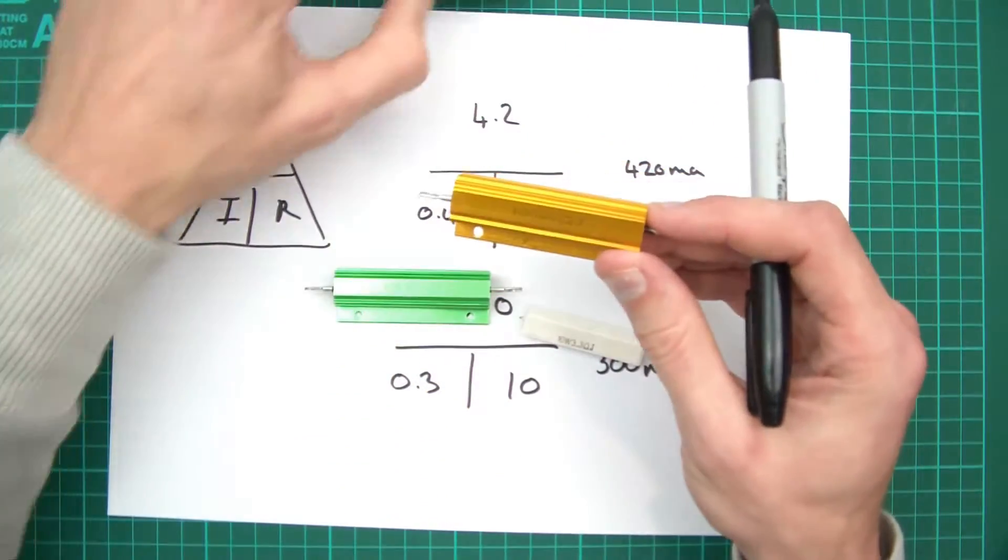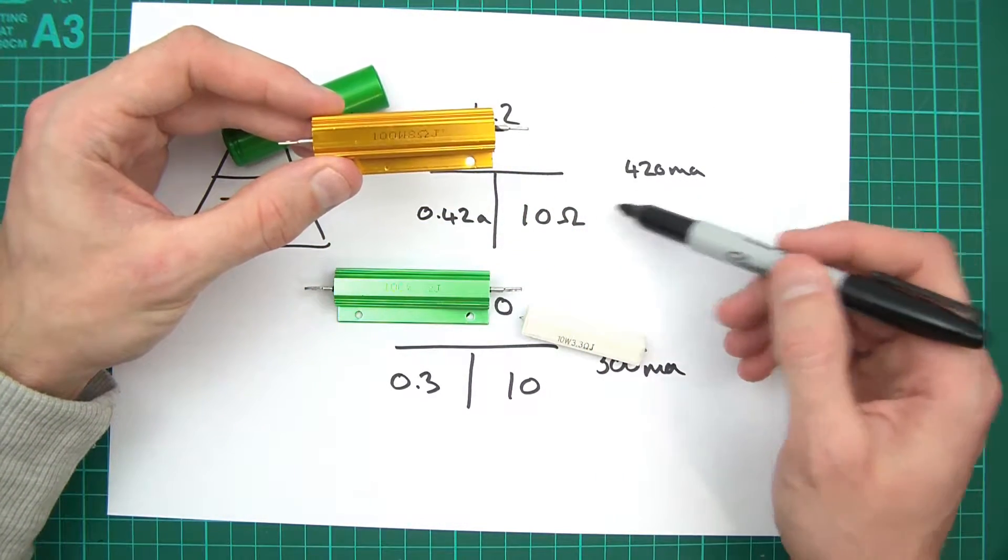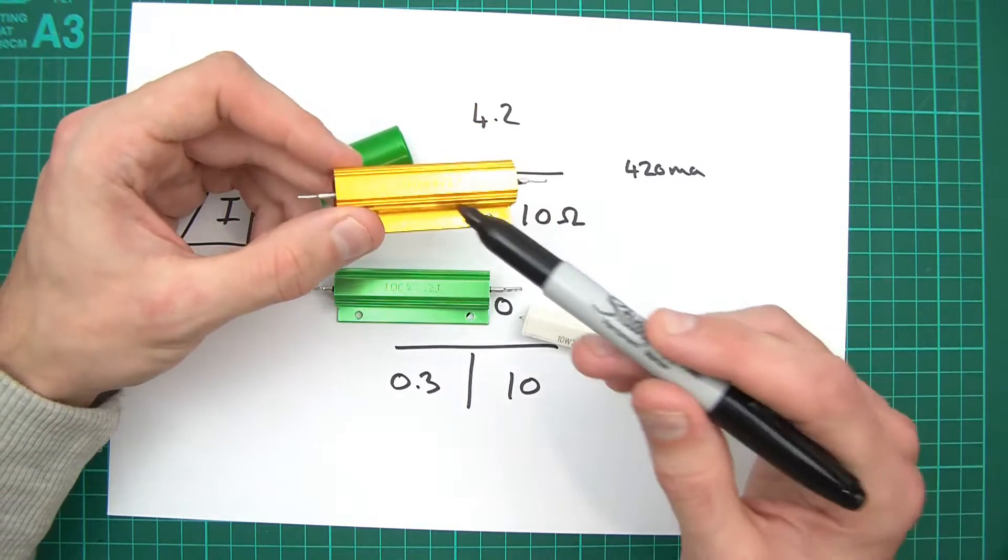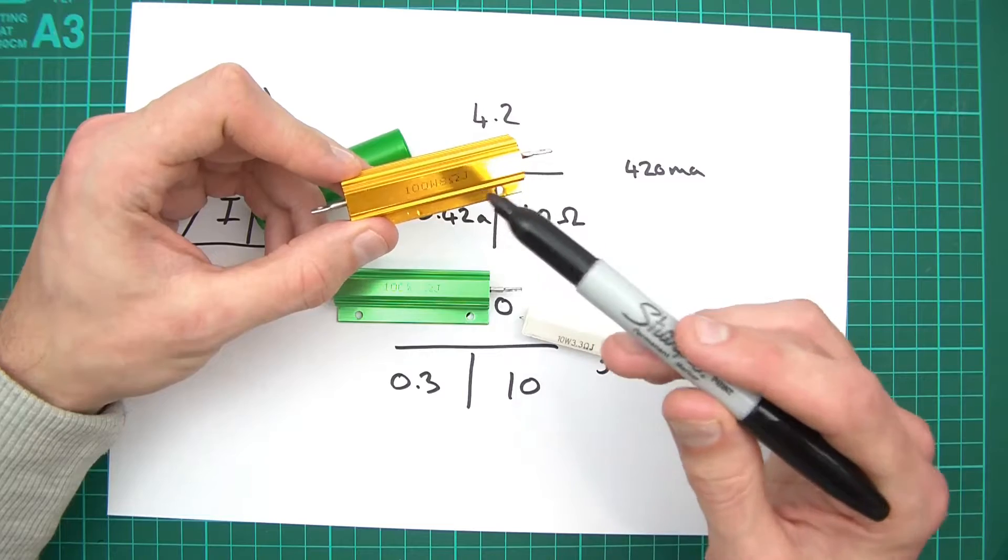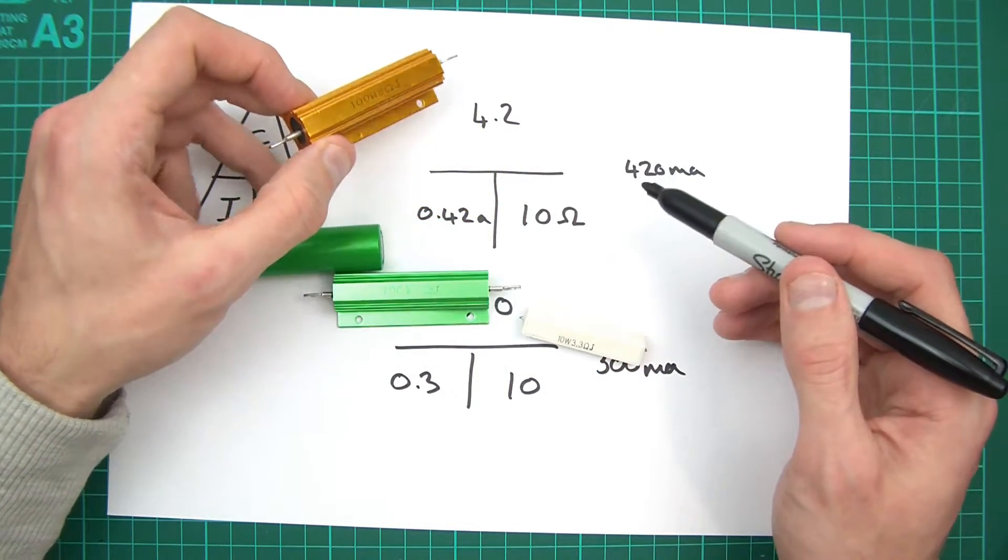This one, 8 ohms, this would be too much resistance. It's not really enough, although it does allow me to dissipate 100 watts, but it's still not enough. It would discharge too slowly.